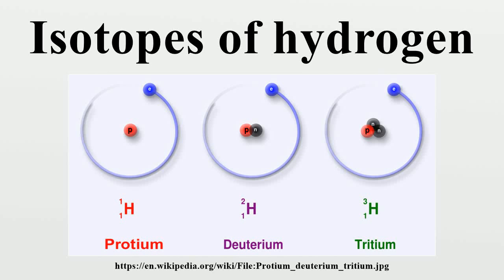Hydrogen has three naturally occurring isotopes, sometimes denoted 1H, 2H, and 3H. The first two of these are stable while 3H has a half-life of 12.32 years. All heavier isotopes are synthetic and have a half-life less than 1 zeptosecond.